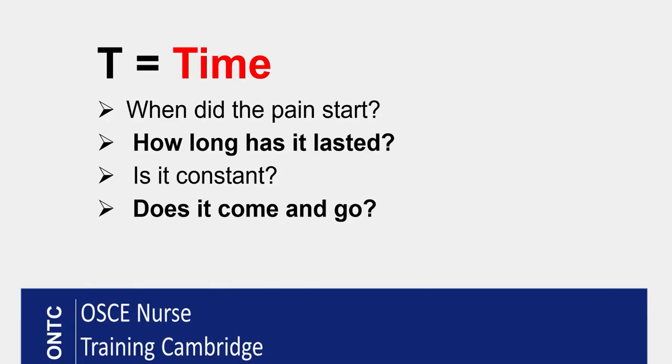The next one is T, which is for the Time period. This is about how long the pain has lasted — does it come and go, is it there all the time, is it constant? We need to know that because it will really affect our management of the pain as well.